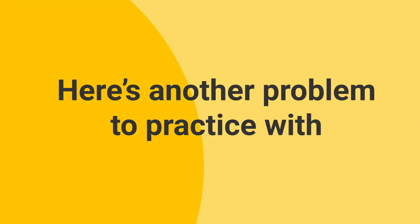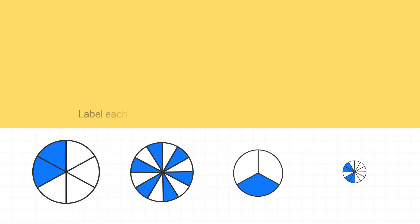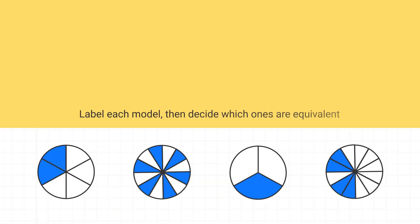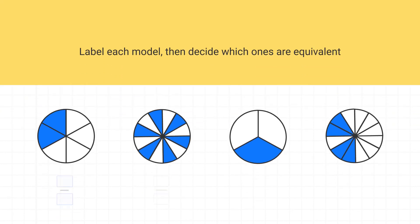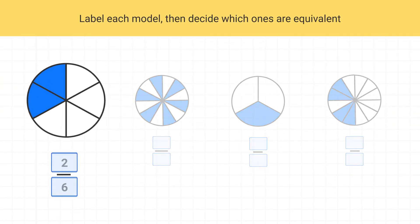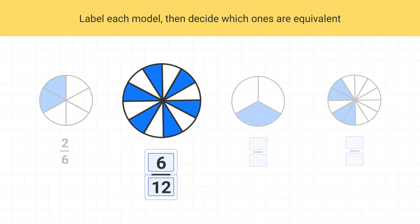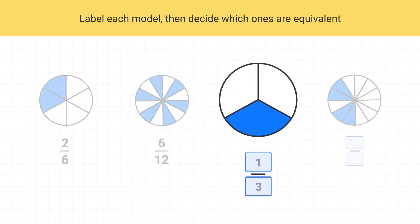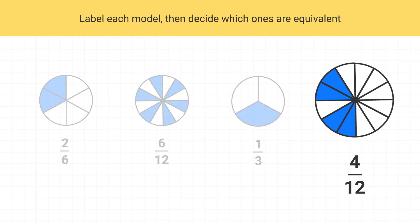Now here's another problem to practice with. Let's start by labeling each of these models. This model is two-sixths. This model is six-twelfths. This model is one-third. And this model is four-twelfths.